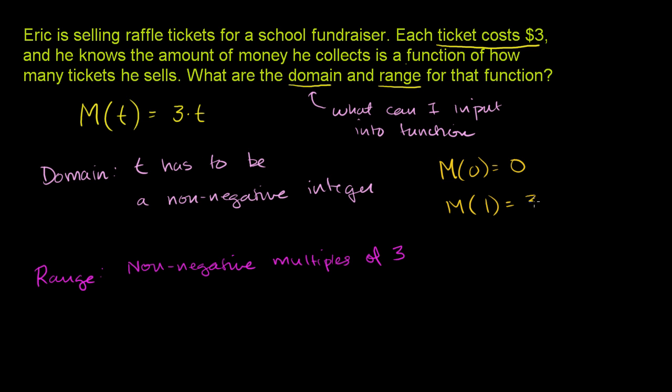If he sells two tickets, he's going to get $6. So he's never going to be able to get 2 or 4. Every possible value for the amount of money he collects for our function has to be a multiple of 3. It's going to be a non-negative multiple of 3, because the domain is non-negative integers.